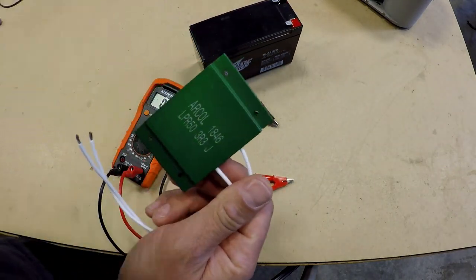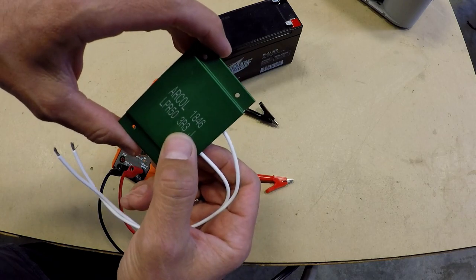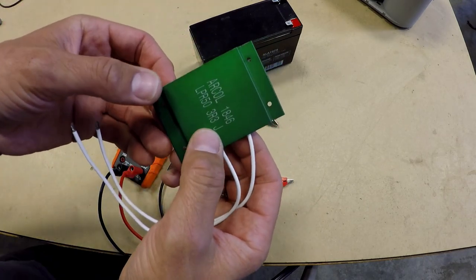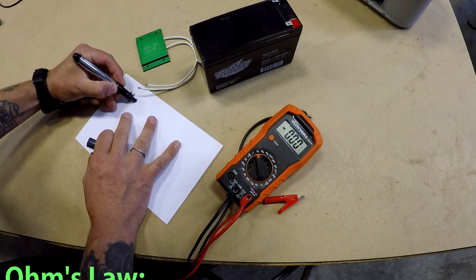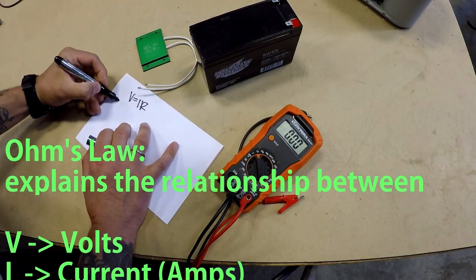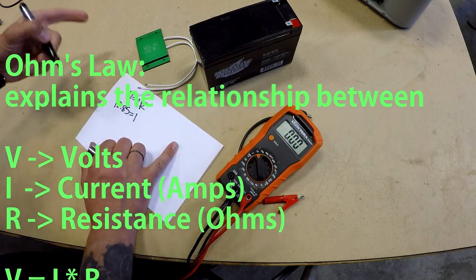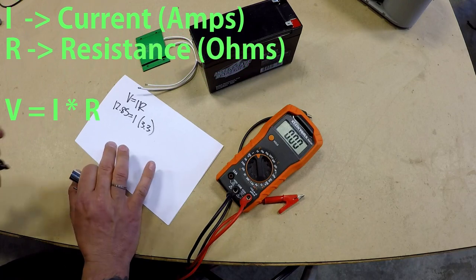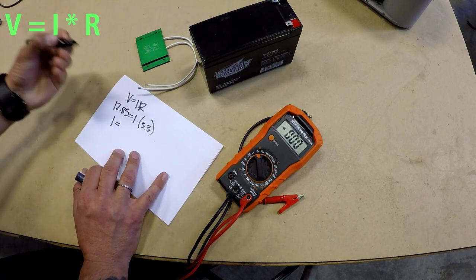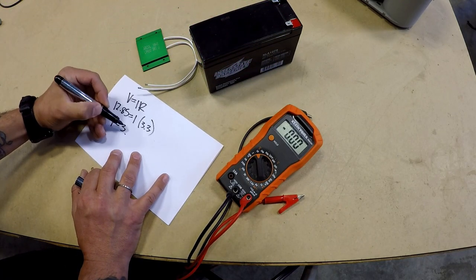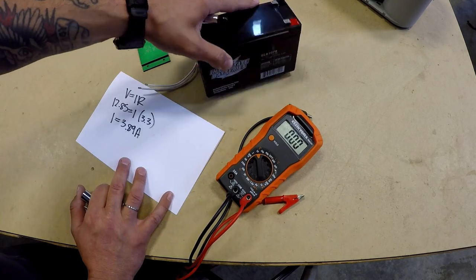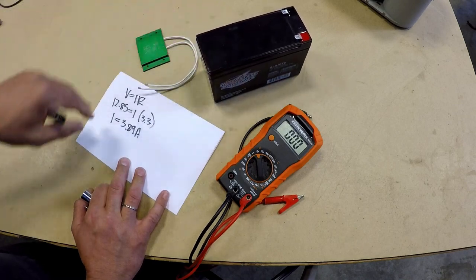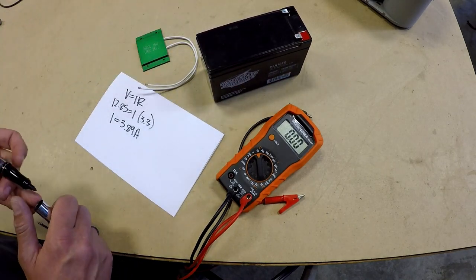The resistor we have on hand to do our load test is a 3.3-ohm chassis mount, cool-looking flat resistor. So according to Ohm's law, V equals IR, and in this case our battery voltage is about, let's say, 12.85. The resistance, according to that, is 3.3 ohms. We could actually check that with our meter if we really wanted to make sure, but based on the math, we should be pulling a little bit under 4 amps or so, which is perfect. That will give us a good approximation to know whether or not this battery can actually output the power it's supposed to. Let's put this circuit together and let's test it.